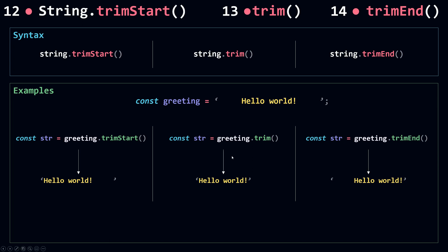When you call Trim, TrimStart, or TrimEnd on a string that doesn't have any white space characters at the start or end, they won't remove any white space characters and they won't throw an error. They will just return the original string without any changes — it's like making a copy of the string.